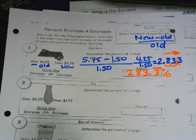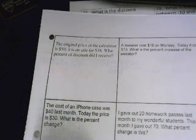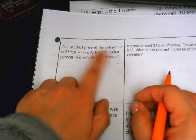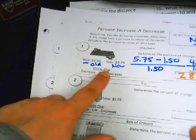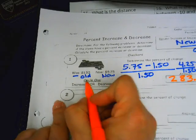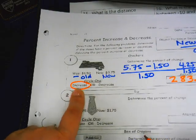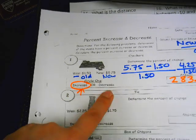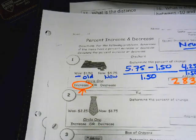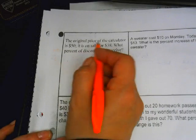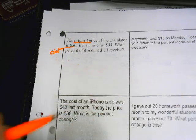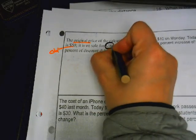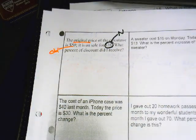I'm going to do the one in the back for you. Let's turn to the back — pause what you're doing, turn to the back. Number one: the original price of the calculator is $50. It is on sale for $38. What percent discount did you receive? Right here, circle one — did my price increase or decrease? The original price of the calculator is $50. 'Original' means this is the old. It is on sale for $38 — this will be your new.